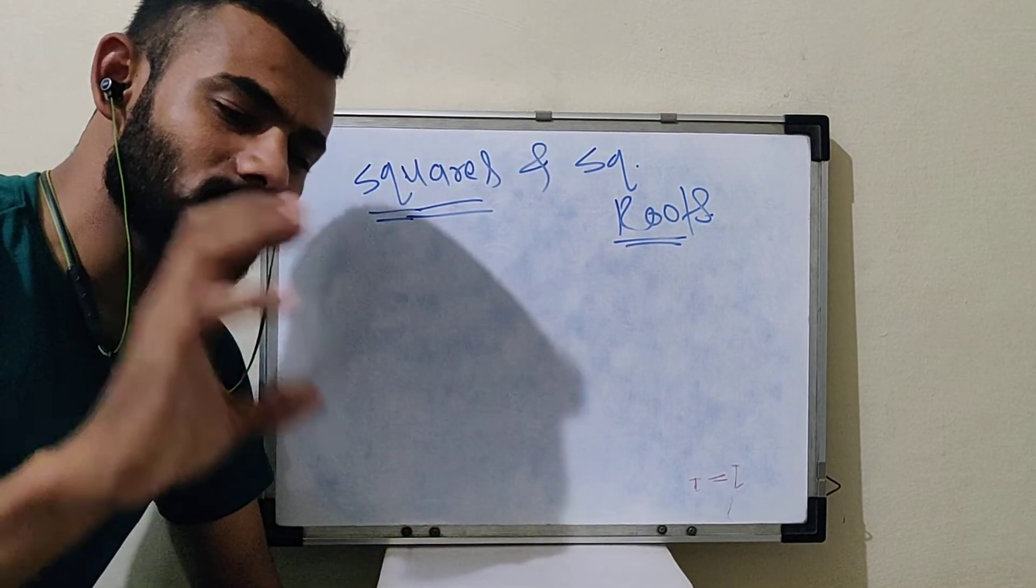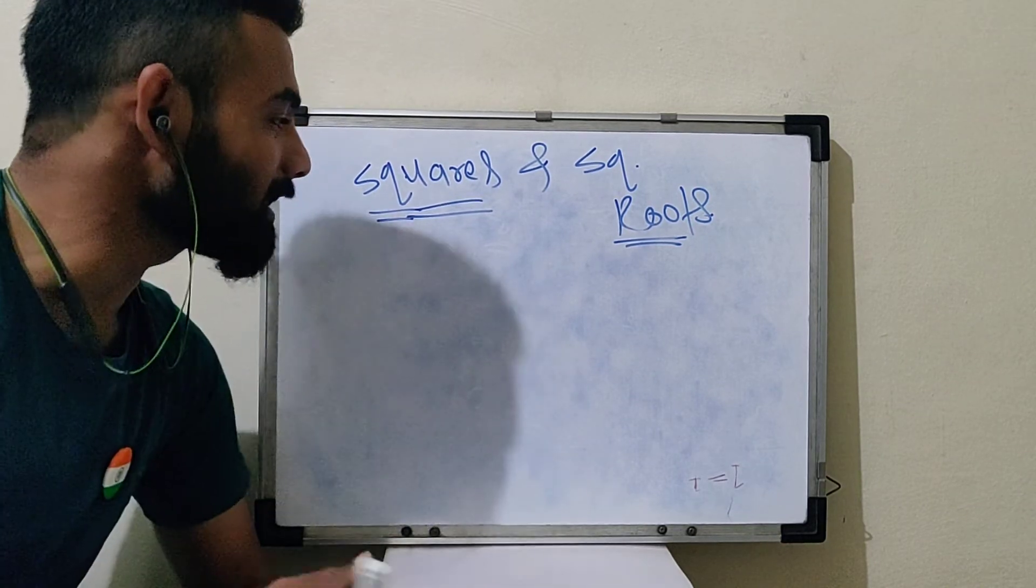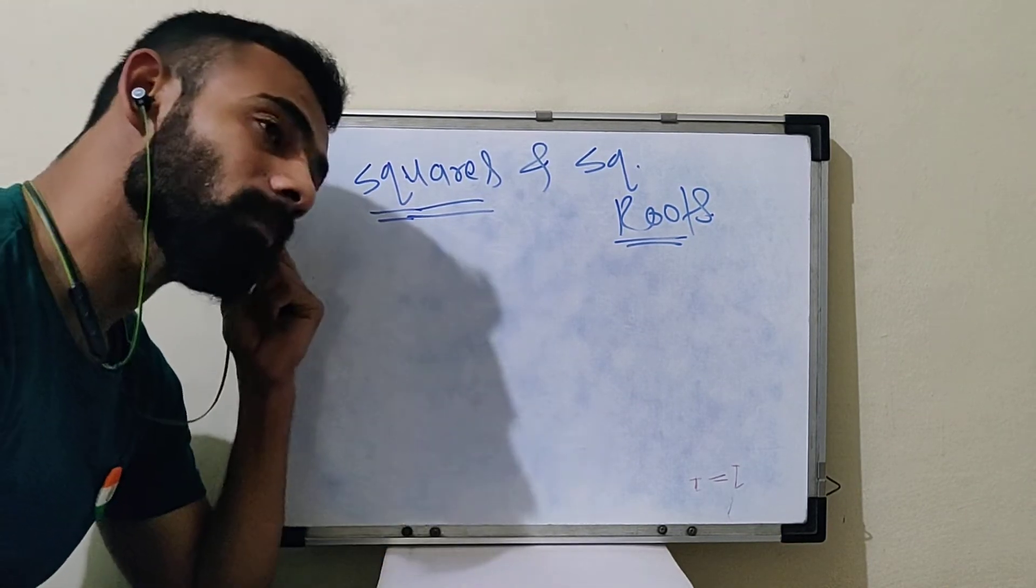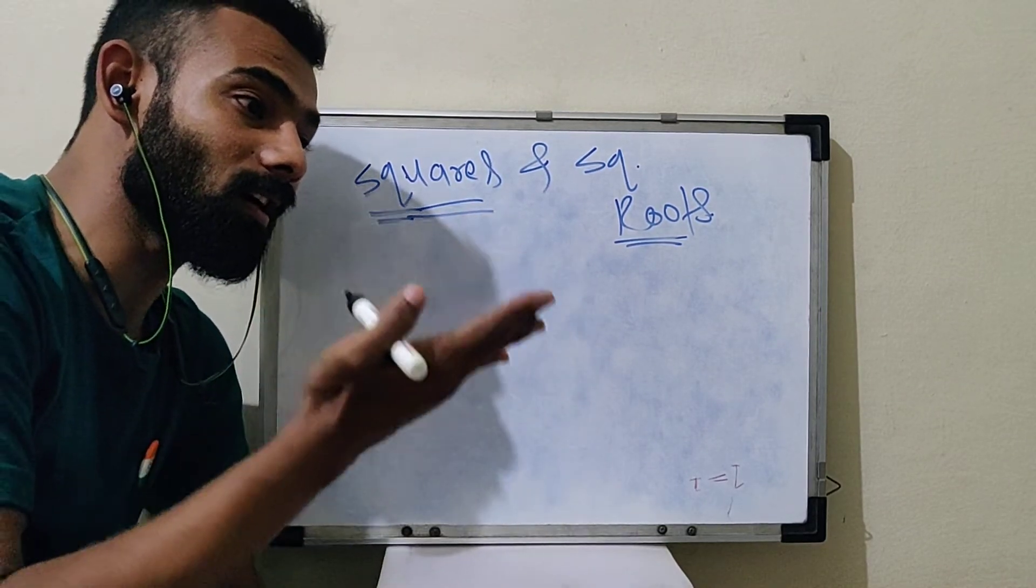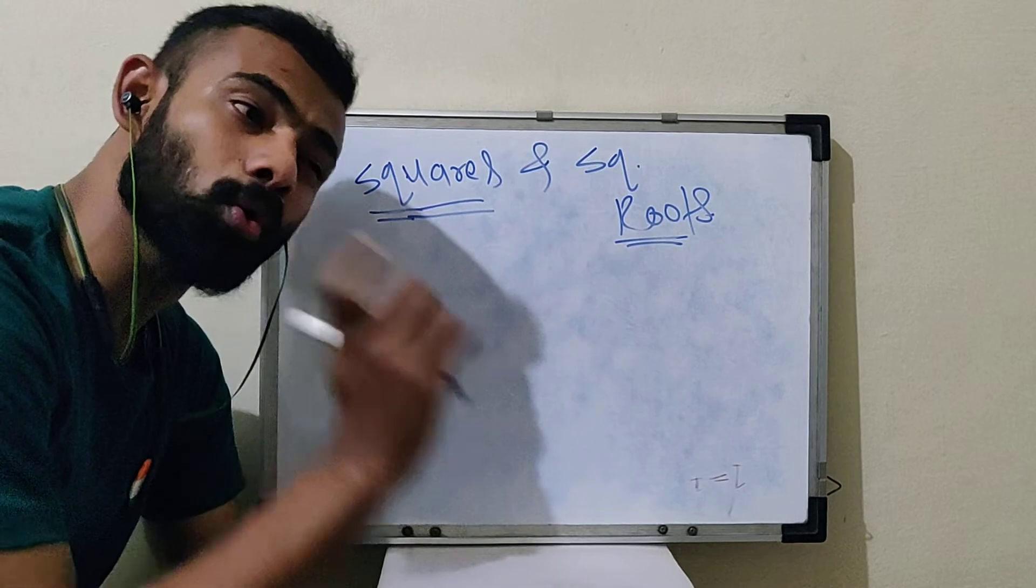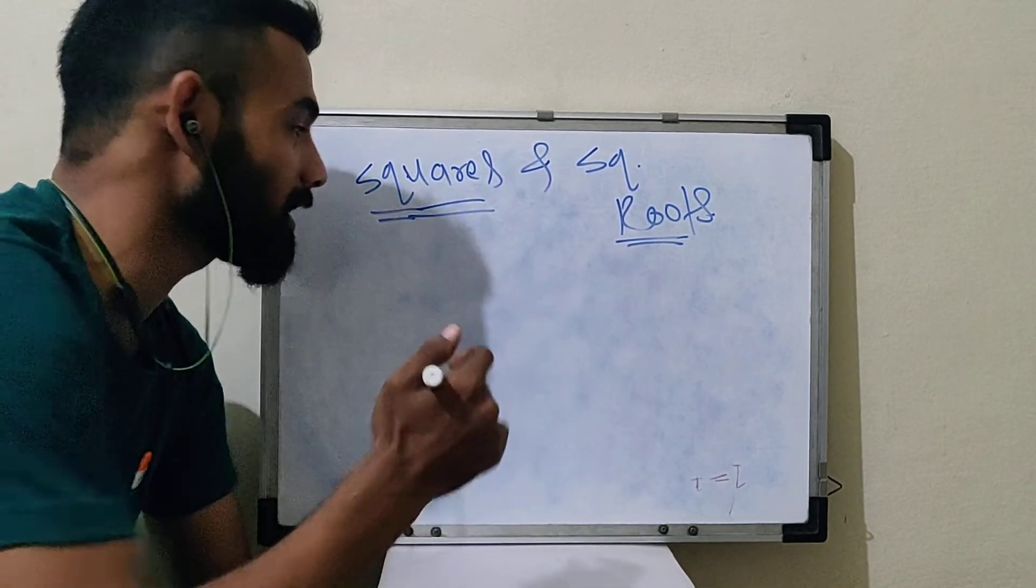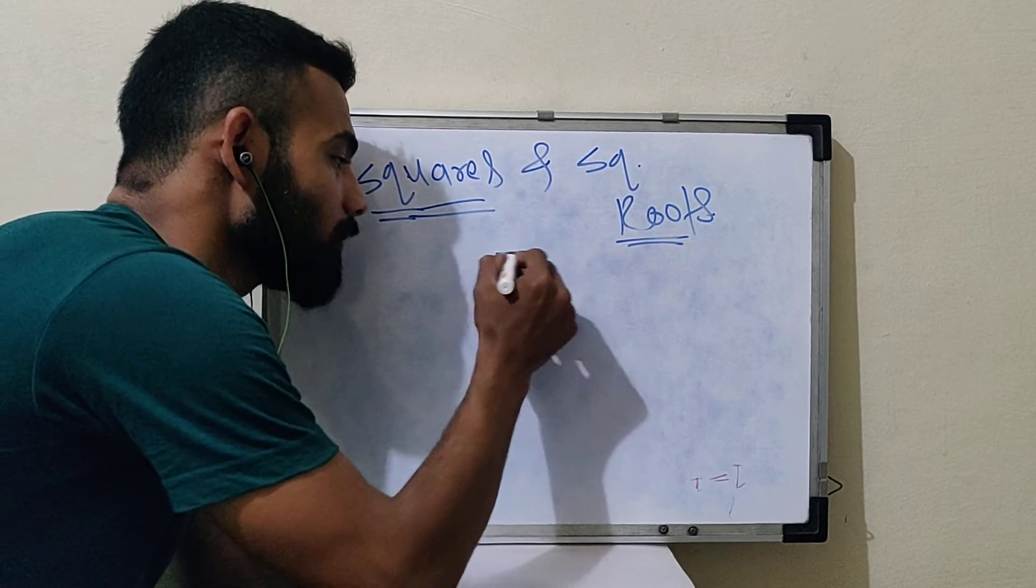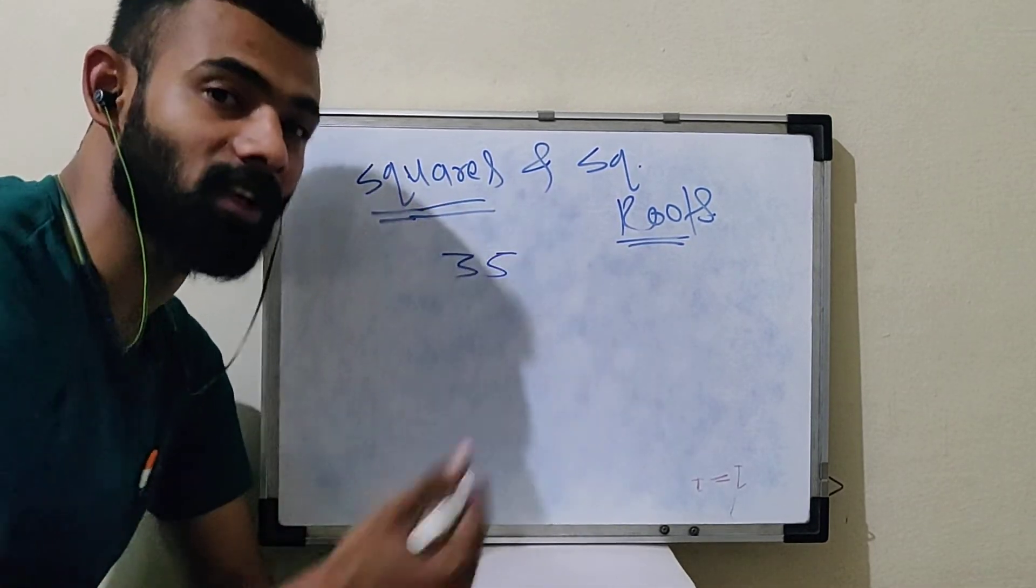So today's video, it's a very short video. What are we going to see? Those numbers, those squares which ending is 5. Like, let me give you an example. This is 5. So for example, 35. What is the square of 35?